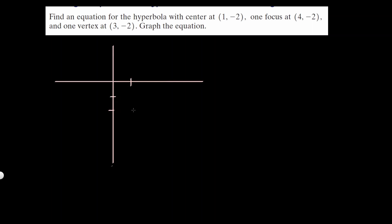Let's do another problem — you may pause and try it yourself. We have center at (1, negative 2) and one focus at (4, negative 2), and one vertex at (3, negative 2). Since the center is at (1, negative 2) and the vertex is at (3, negative 2), you went right 2 units, so there's another vertex 2 units left at (negative 1, negative 2).